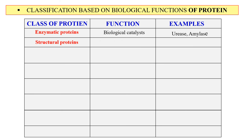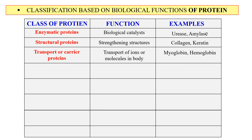Second, structural proteins — these are proteins involved in the formation of structures and they give strength to those structures. Examples include collagen and keratin. Next, transporter or carrier proteins — these are proteins involved in the transportation of ions or molecules in the body. Examples include myoglobin and hemoglobin; for instance, hemoglobin transports oxygen to the lungs.